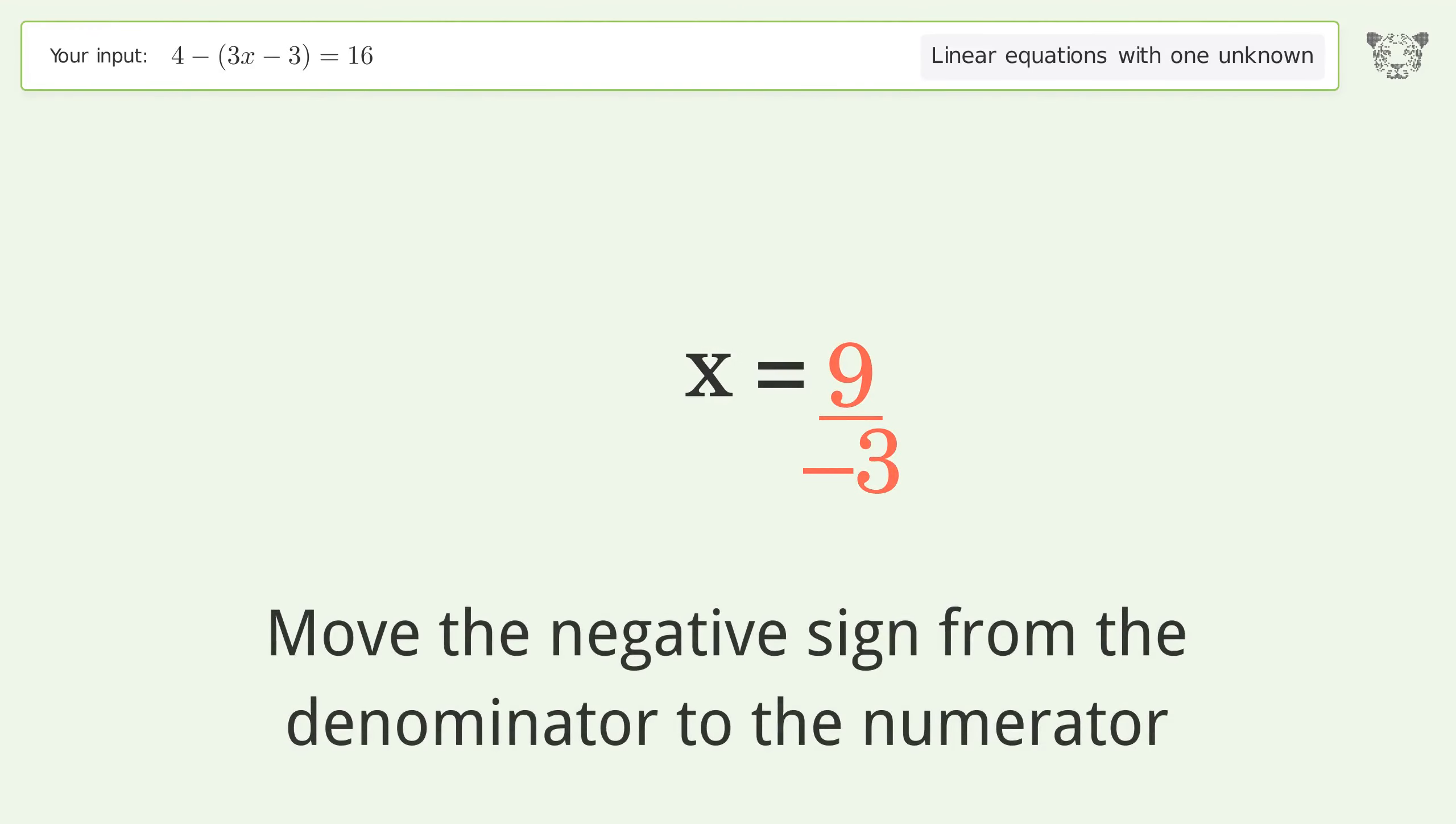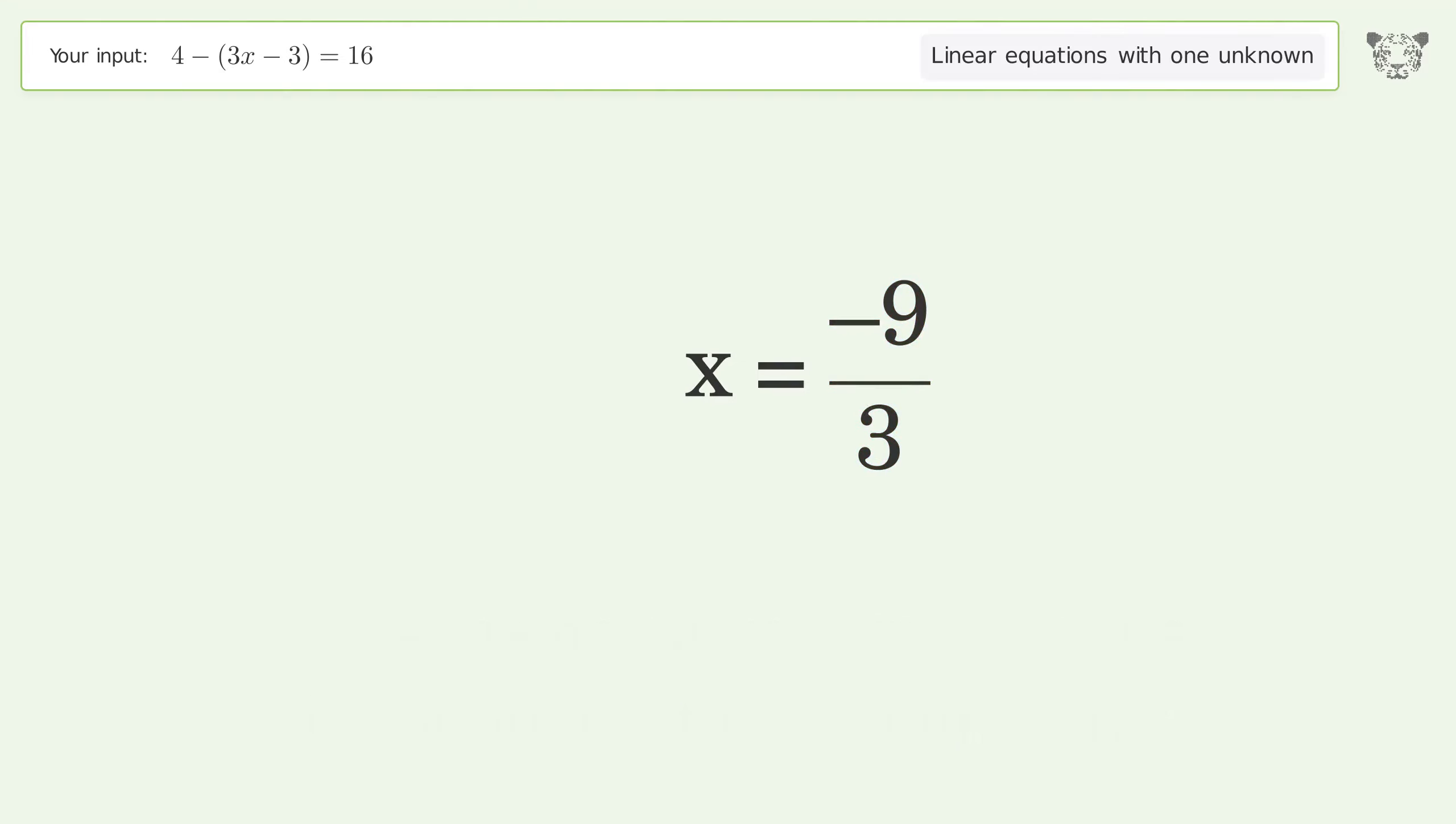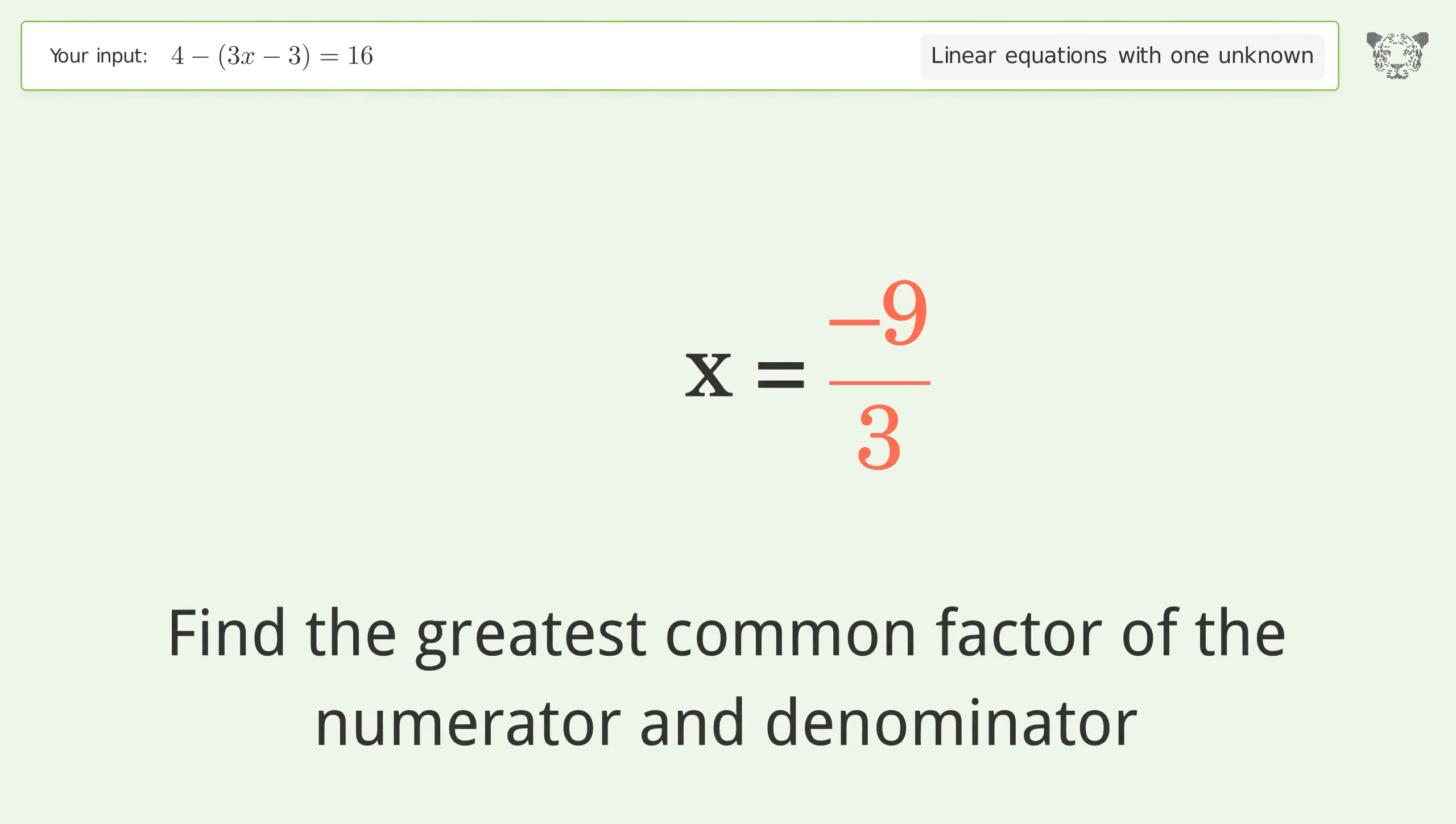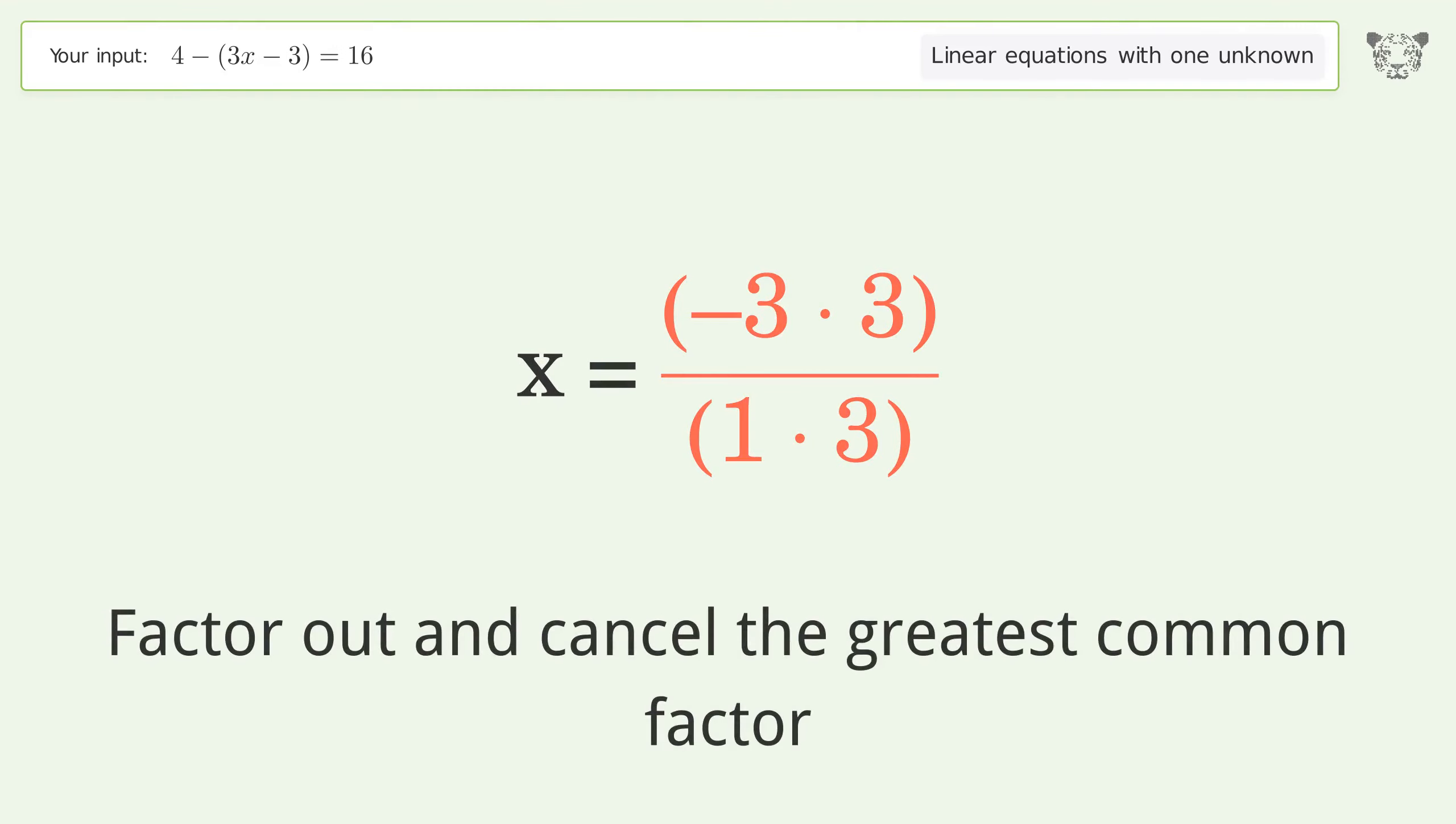Move the negative sign from the denominator to the numerator. Find the greatest common factor of the numerator and denominator, then factor out and cancel the greatest common factor.